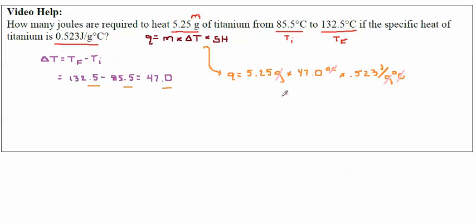Now, the other thing you have to keep in mind as well, 5.25, we're now, since we're multiplying, we're basing it off of significant figures. 5.25 has 3 sig figs, 47.0 has 3 sig figs, and 0.523 has 3 sig figs. So your final answer needs 3 sig figs. So when you do this out, I end up getting 129 joules.